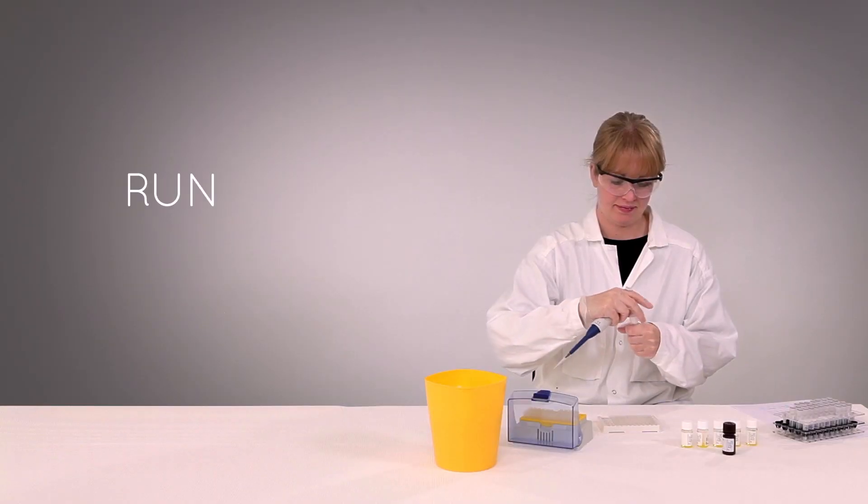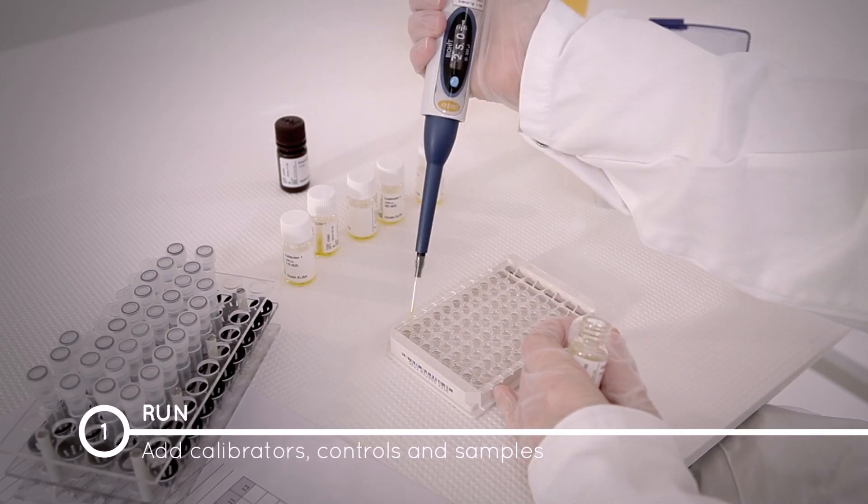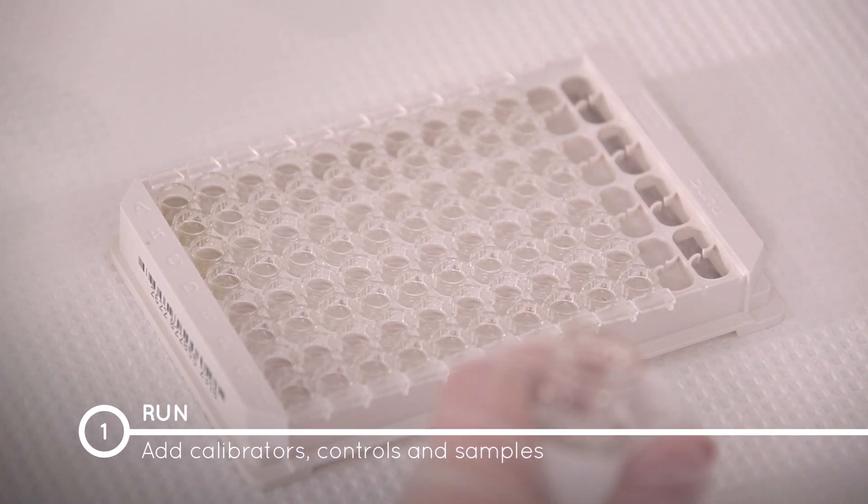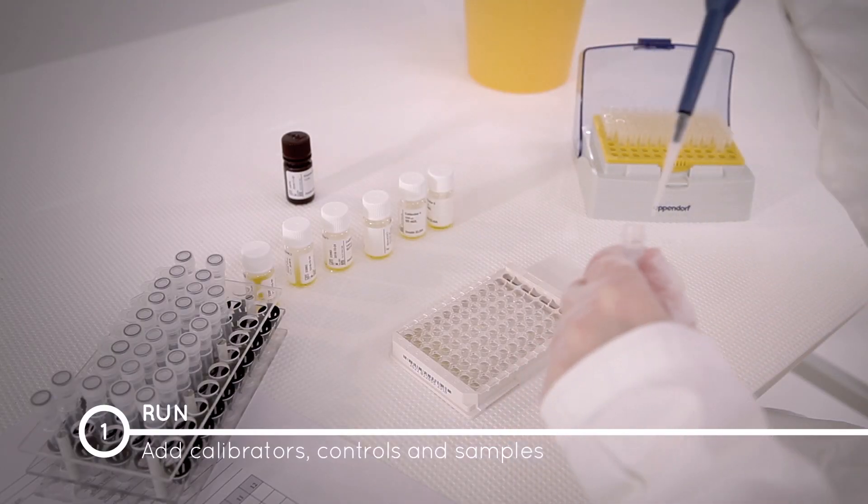Now, pipette 25 microliters each of calibrators, controls, and samples into the appropriate wells. Each calibrator, control, and sample should be run in duplicate for quality assessment.